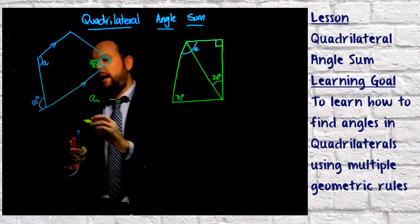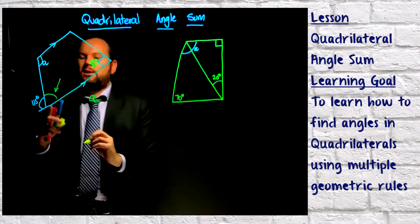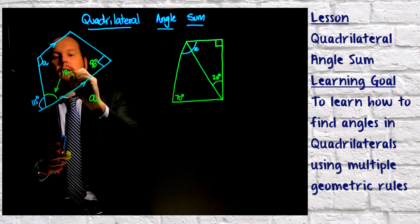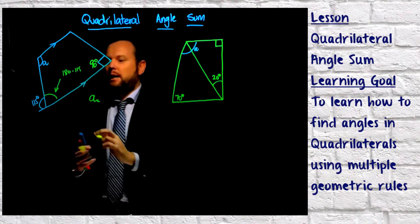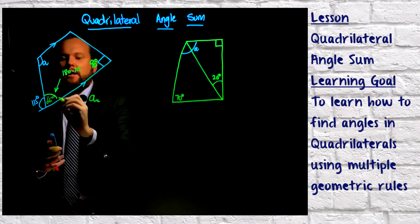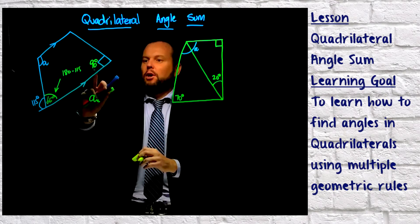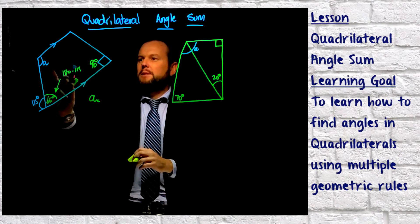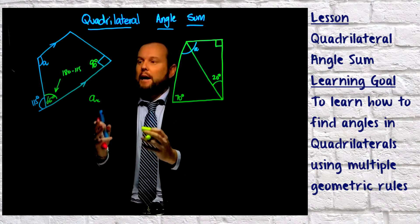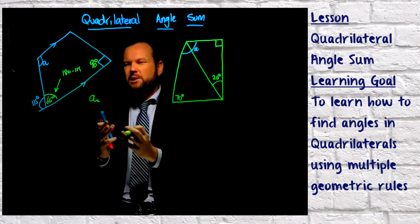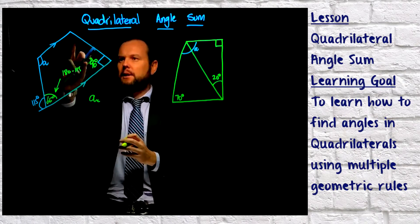Now you could say that because this is on a straight line, this angle in here is going to equal 180 take away 115, and that's going to give us a size of 65 degrees. Now here's the issue, I know that that's 65, I know that that's 90, but I'm still short two angles and remembering that all quadrilaterals add up to 360 degrees. So I'm still short by this angle here.